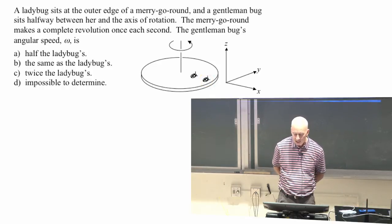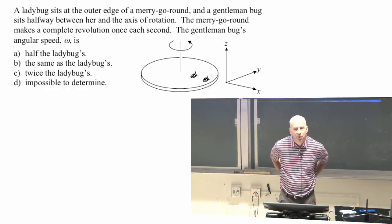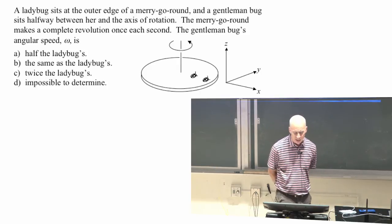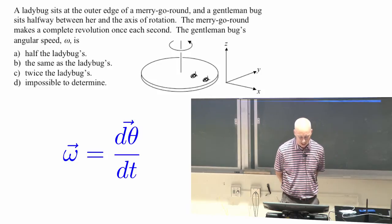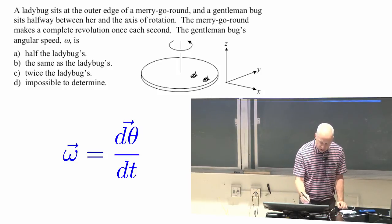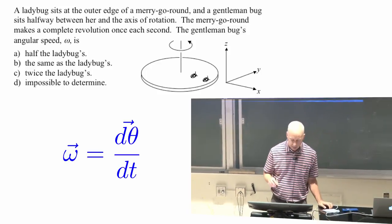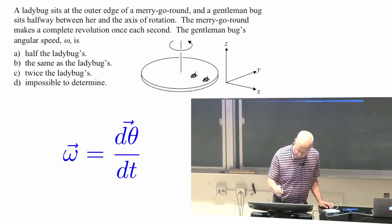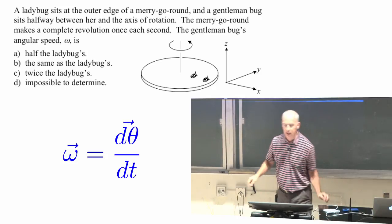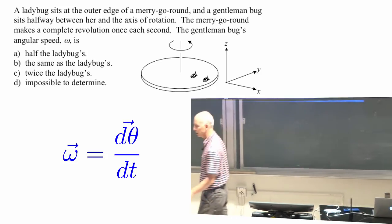The merry-go-round makes a complete revolution all the way around once every second. The gentleman bug's angular speed is... so angular speed is the change in the angle per unit time. What can you say about the gentleman bug's speed compared to the ladybugs?